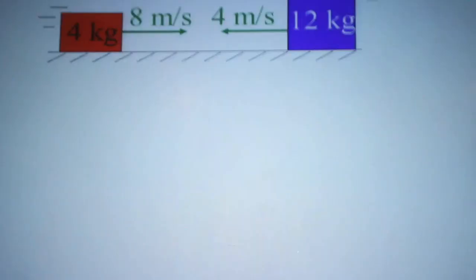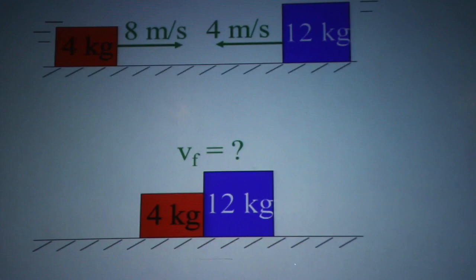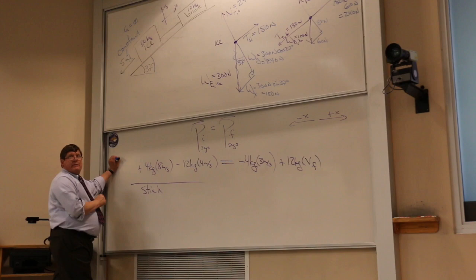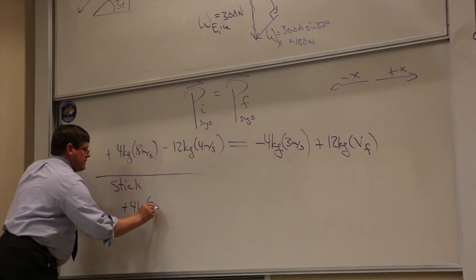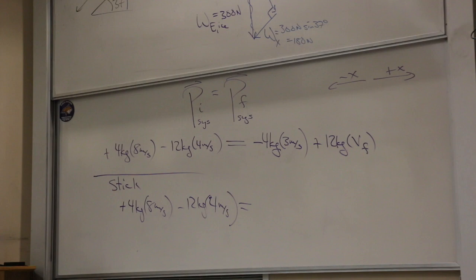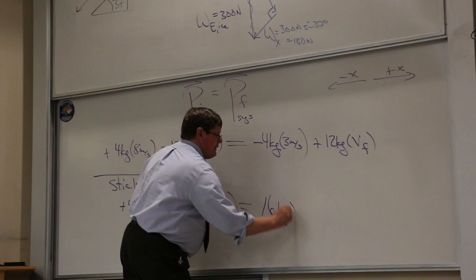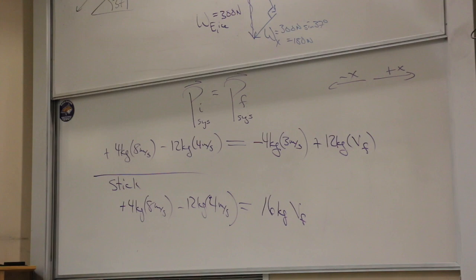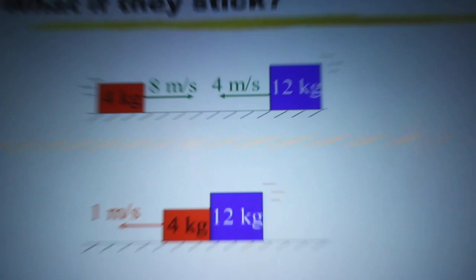The other version of this problem has them stick together — ask what the velocity is after. If they stick, I have the same information before the collision, but after, they move together as one object with mass 16 kilograms. The total momentum has to be negative 16 kg·m/s, and with 16 kilograms that's easy: one meter per second to the left.